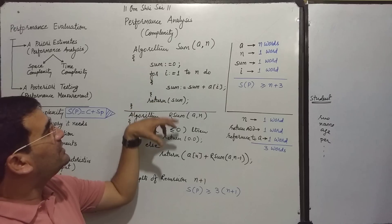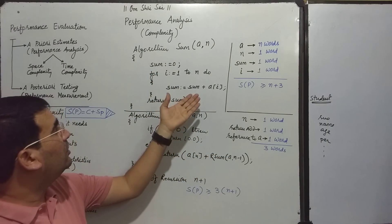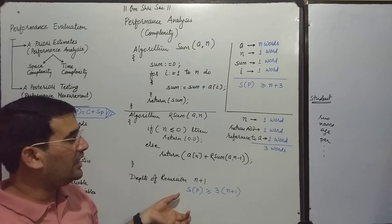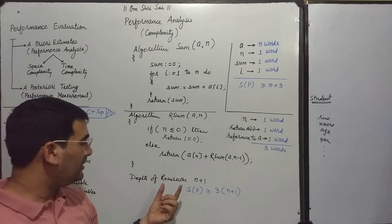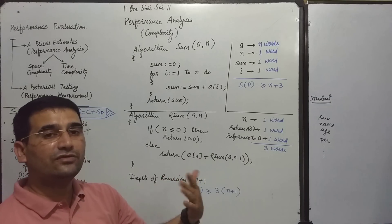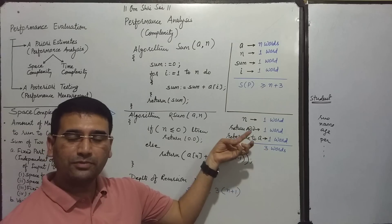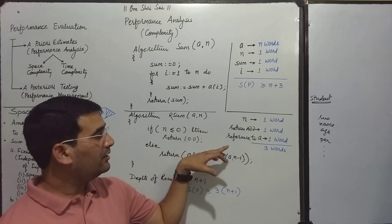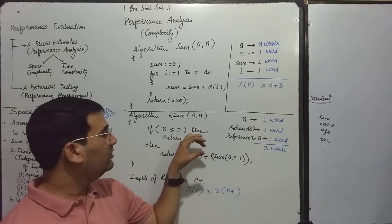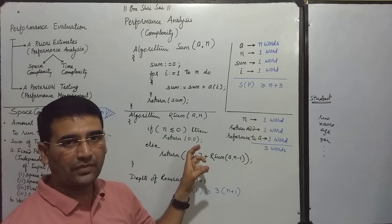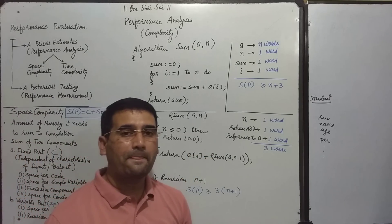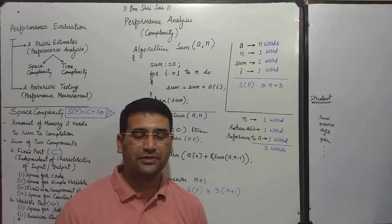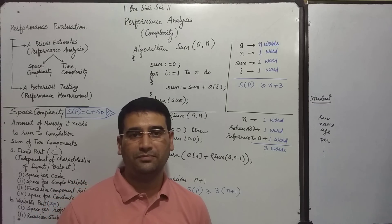We have taken two examples to calculate space complexity — one for a normal function call and another for a recursive function call. For recursive function call complexity, we need to consider depth of recursion and memory per call. This is all about space complexity. In the next video, we will discuss time complexity. Please like, share, comment, subscribe to the channel, and press the bell icon for more updates. Thank you.